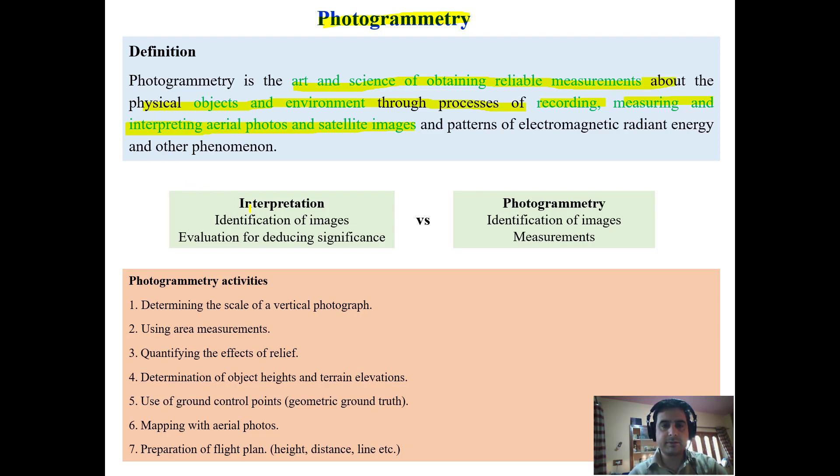There is a difference between interpretation and photogrammetry. While both have the first stage as identification of images, the second stage in interpretation is evaluating the identified features for deducing their significance, their utility, their importance.